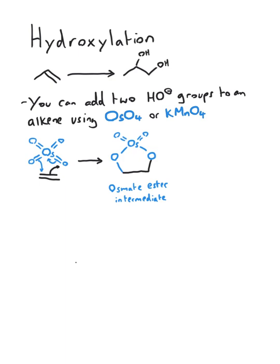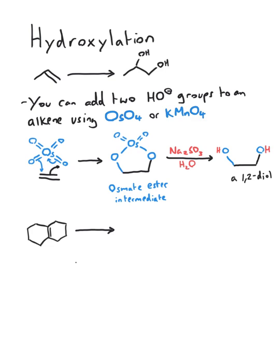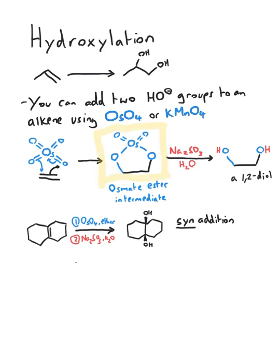It looks something like this. If you have an alkene and osmium tetroxide, it will react in this cyclic fashion to give you an osmate ester, at which point you add sodium sulfite to give you your diol as product. It's a two-step method: first, add the osmium tetroxide, and the second step is to cleave it off with the sodium sulfite. This is a syn addition, so we get both hydroxides on the same face. Why is this? Because both oxygens for the hydroxides come from the single osmium tetroxide molecule.